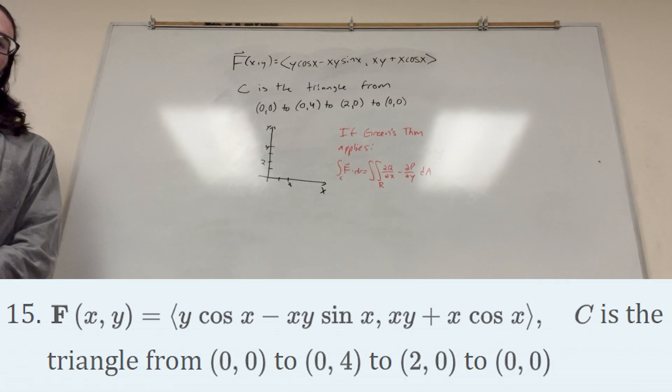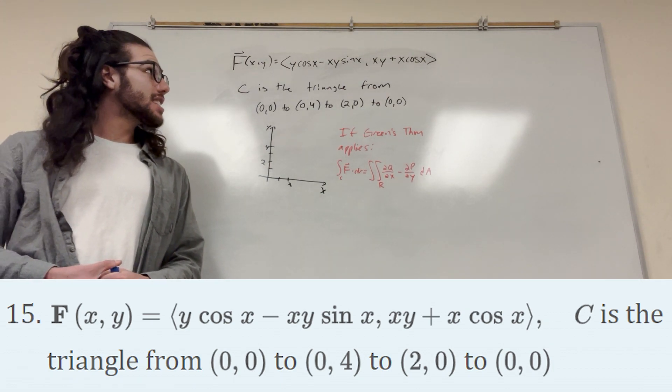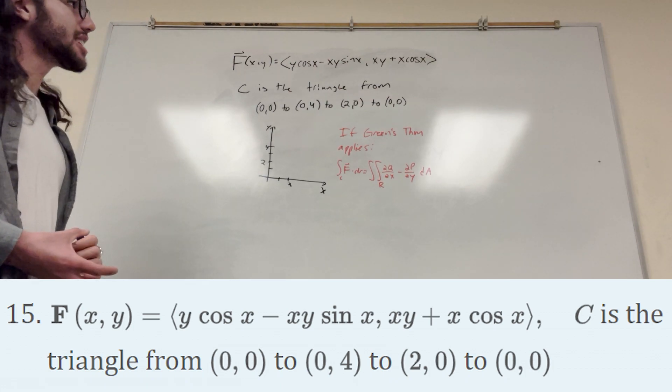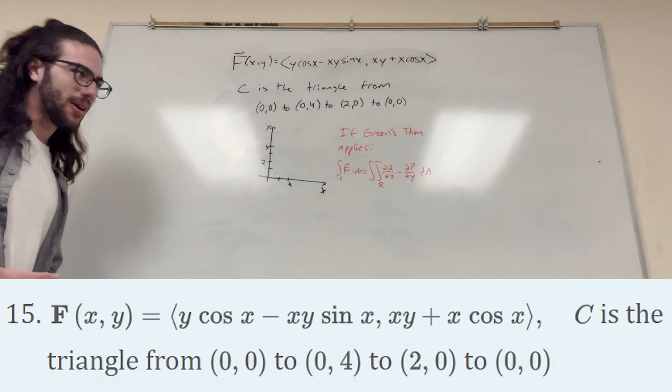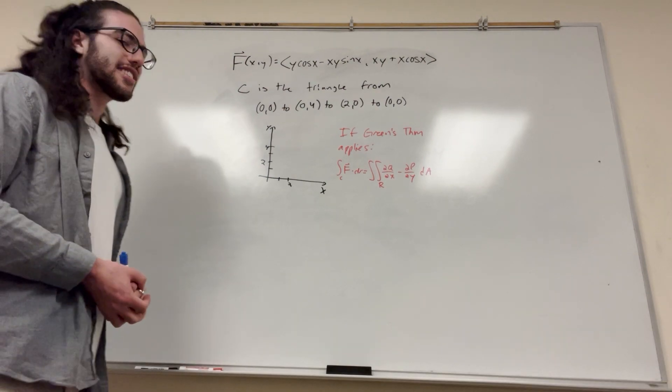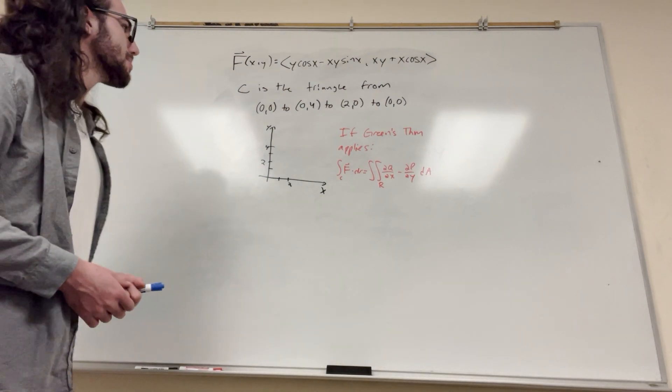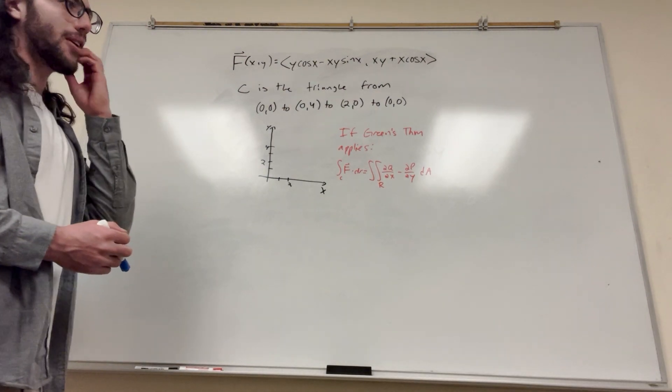What's up, Cal gang? So we got a line integral problem on our hands. Looking pretty tough. There's a lot of x's and y's and cosines and sines, and I don't want to do all that. How are we going to avoid it? We're going to try Green's Theorem. Let's just go ahead and write out what we know.